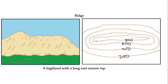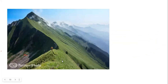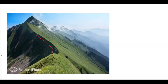This is a ridge. On the map, notice that the innermost contour lines are long and narrow — they have an elongated shape. In reality, the ridge rises from all sides and its top is long and narrow. If you had contour lines drawn along the ridge, they would be long and narrow.